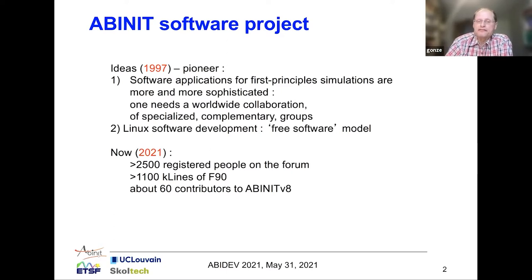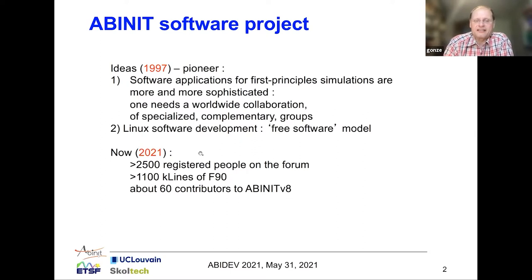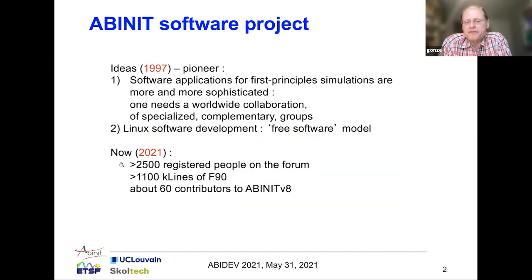We were quickly followed by several other software projects throughout the world. There had been already some commercial software projects, but we were the first to immediately go into the idea of free software. This was kind of very successful. 24 years after, there are more than 2,500 registered people on the forum, and the number of lines of Fortran 90 is more than 1,100,000 lines of code.